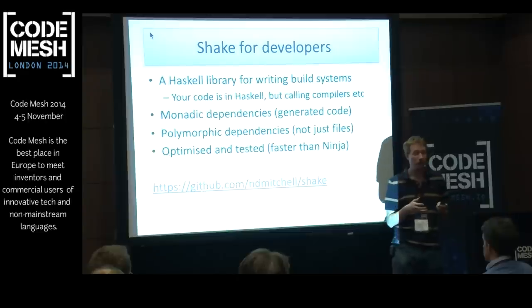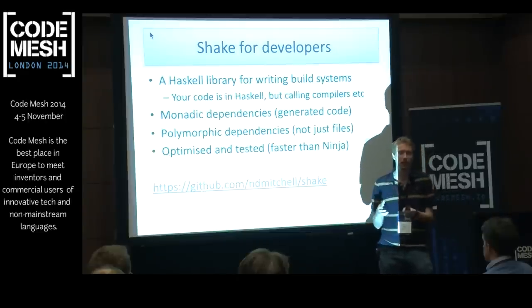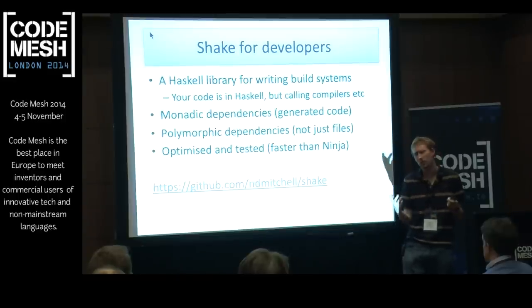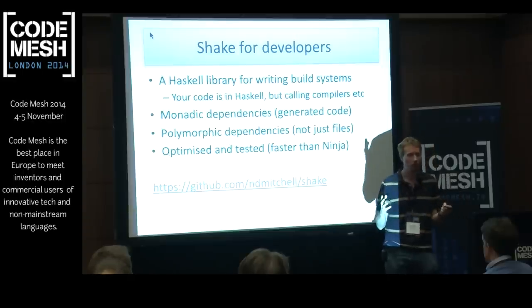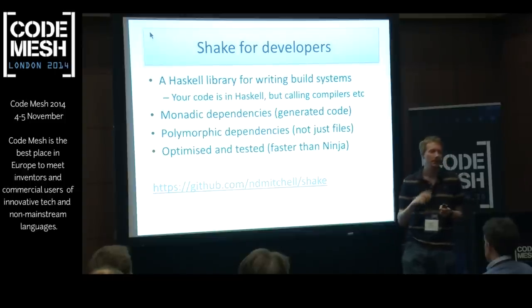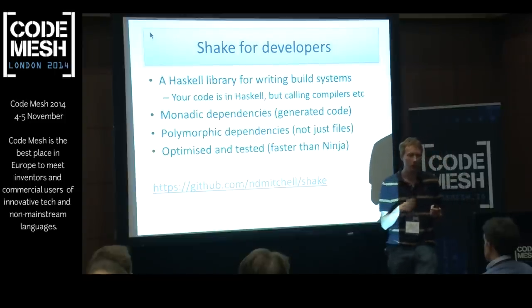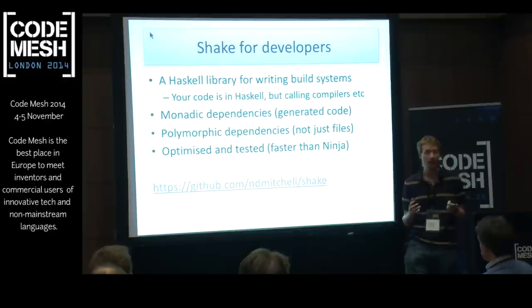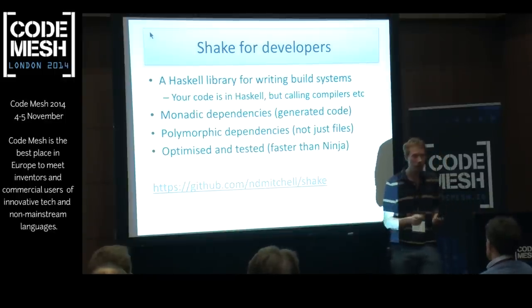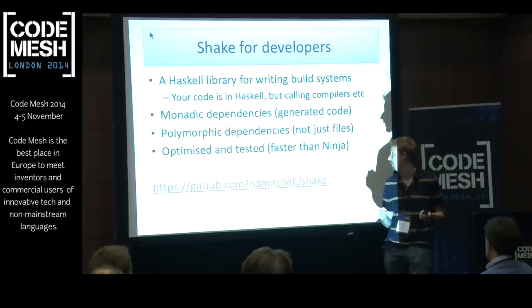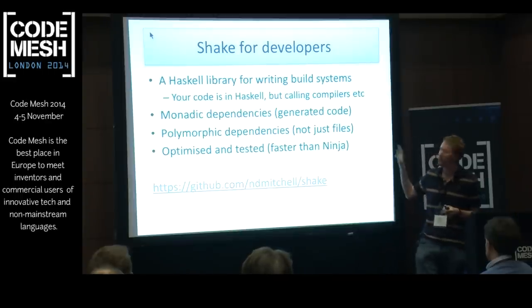Your code is in Haskell, but most of the time you're going to be calling out to compilers and system commands. For some reason people often go straight to bash for this — just go straight to Haskell instead. There are two particular dependency features that Shake has: monadic dependencies, which means you can deal with generated code properly; and polymorphic dependencies, which means your dependencies don't just have to be files on disk.